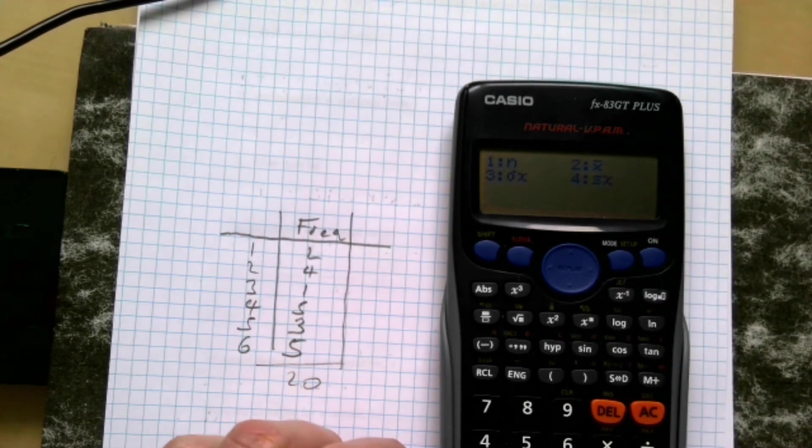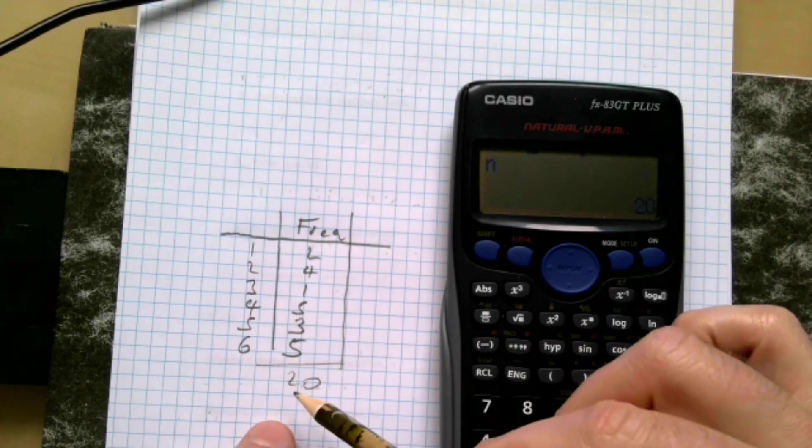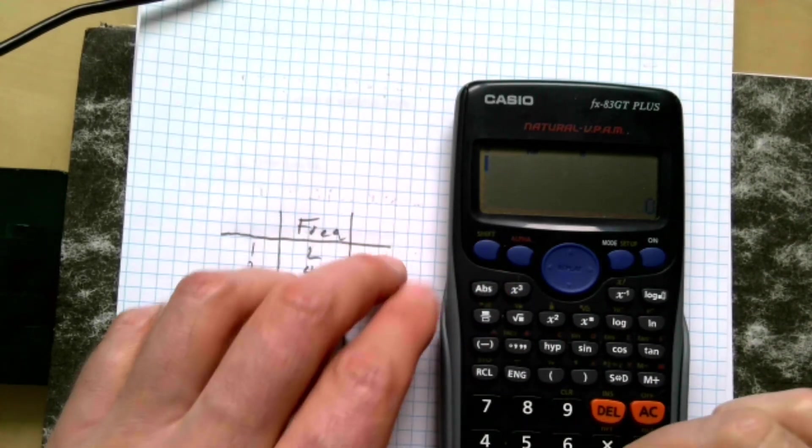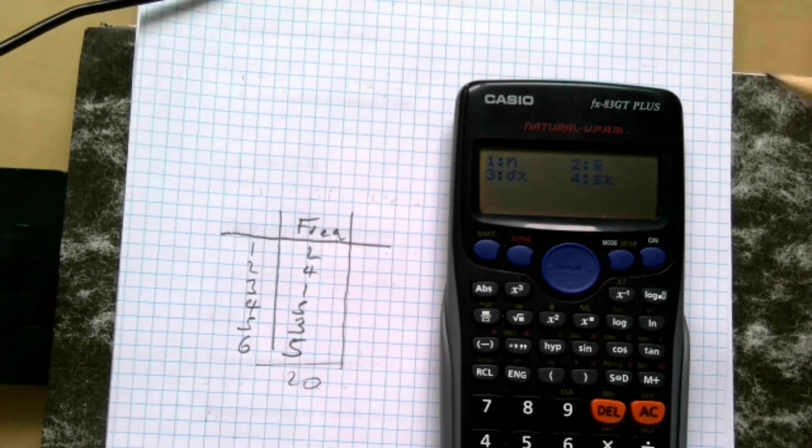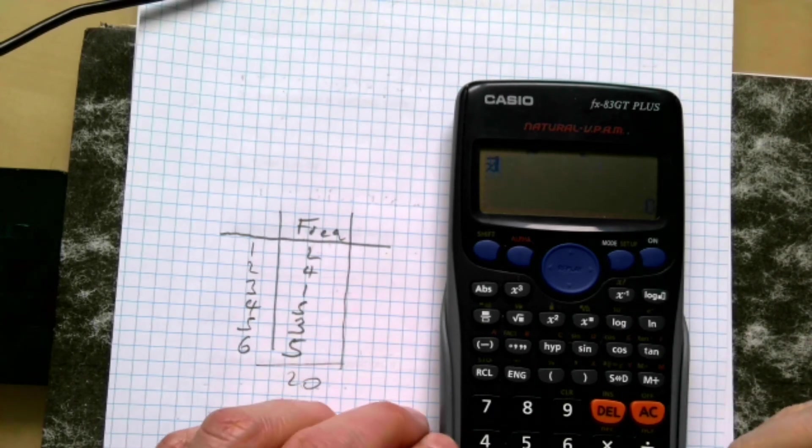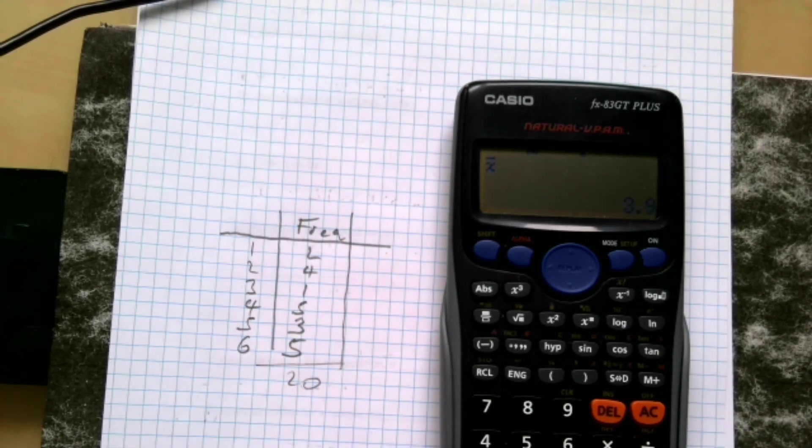And if I cancel out of that again, shift one, four, n, one equals. Of course it's 20, because if you add all up you're going to get 20. Cancel, shift one again, four, and we get our mean here. So let's go for our mean, and our mean then in this case is 3.9. So that's how you use it then for that calculator.